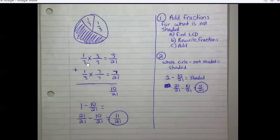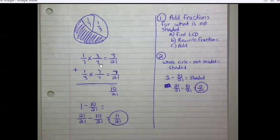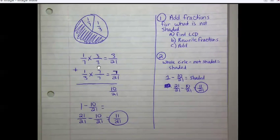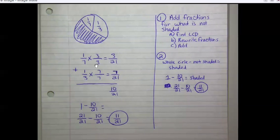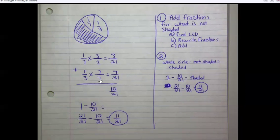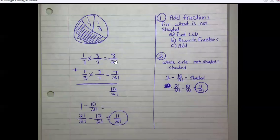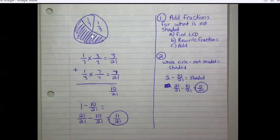For one-seventh and one-third, the least common denominator is twenty-one. Seven times what is twenty-one? Seven times three is twenty-one. What I do to the bottom I have to do to the top: seven times three is twenty-one and one times three is three. Three times seven is twenty-one and one times seven is seven. Now we can add these: three plus seven is ten. So for the not-shaded part, this is ten twenty-firsts.